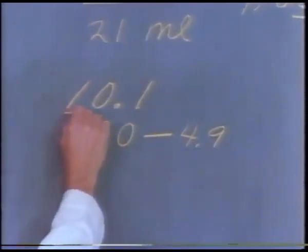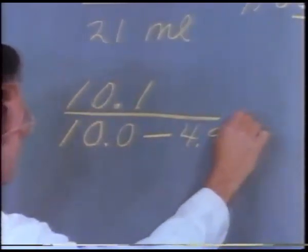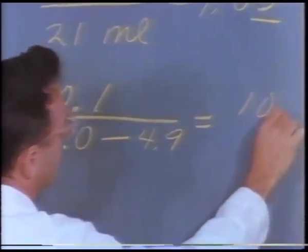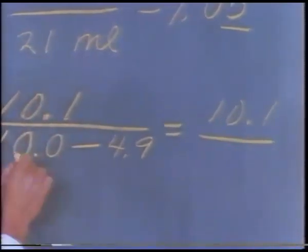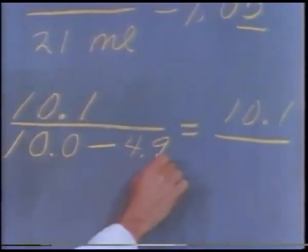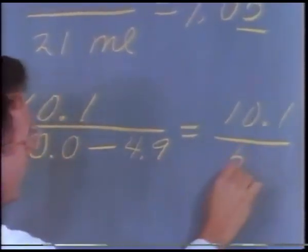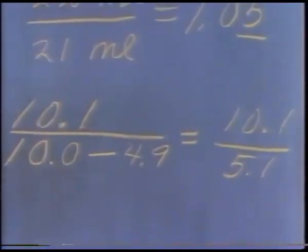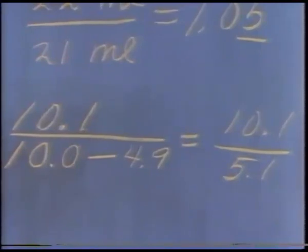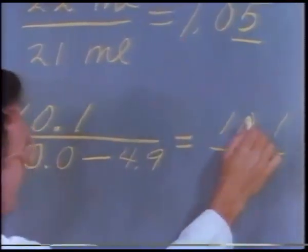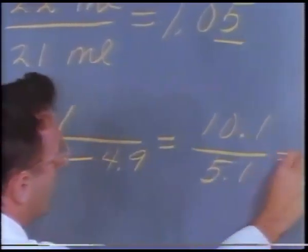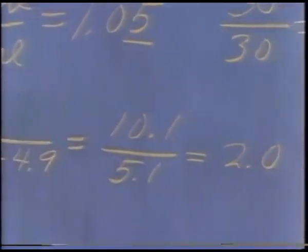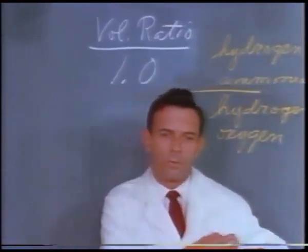The volume ratio can now be calculated. Presumably all of the hydrogen was used, whereas the difference between 10.0 and 4.9 — which is 5.1 — tells how much oxygen was used up. The volume ratio is 10.1 over 5.1, which equals 1.98, or 2.0. Let's add this number to our summary.